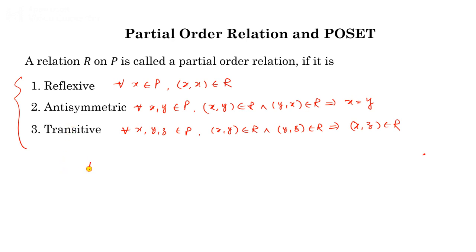A set P with a partial order relation is known as a poset — a set together with a partial order relation. We will use a specific symbol (like ≤ or similar) to denote a partial order relation. Whenever we write this symbol, it denotes that it is a partial order relation.